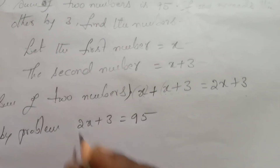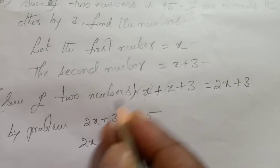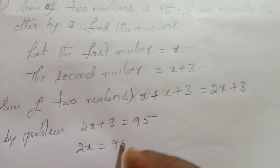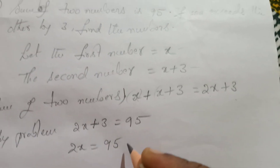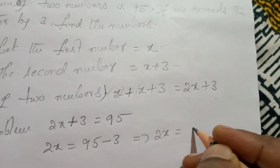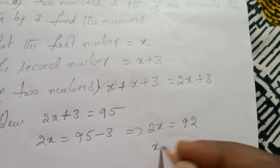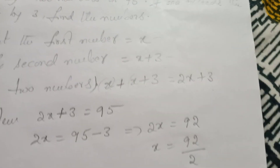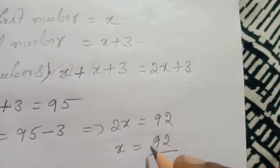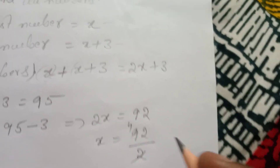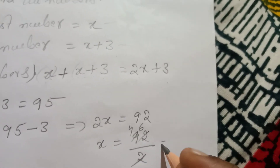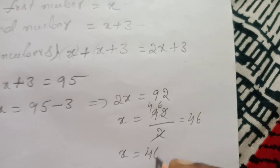Now we find out: 2x plus 3 equals 95, so 2x is equal to 95 minus 3, which is equal to 92. Now x is equal to 92 divided by 2, so x is equal to 46.